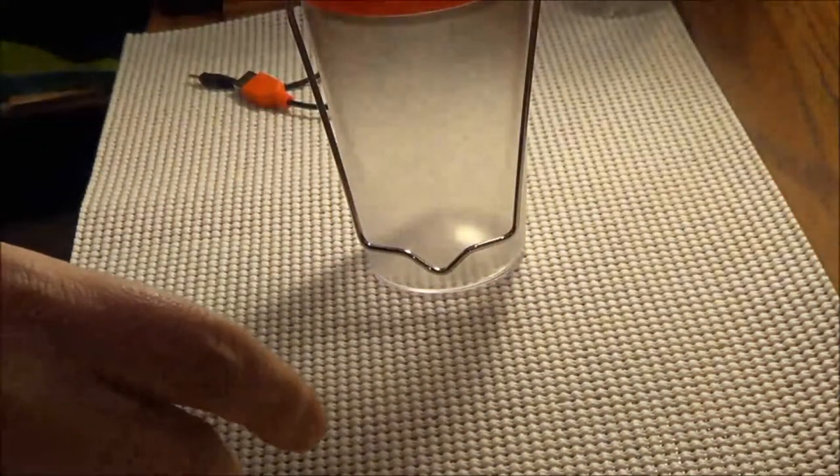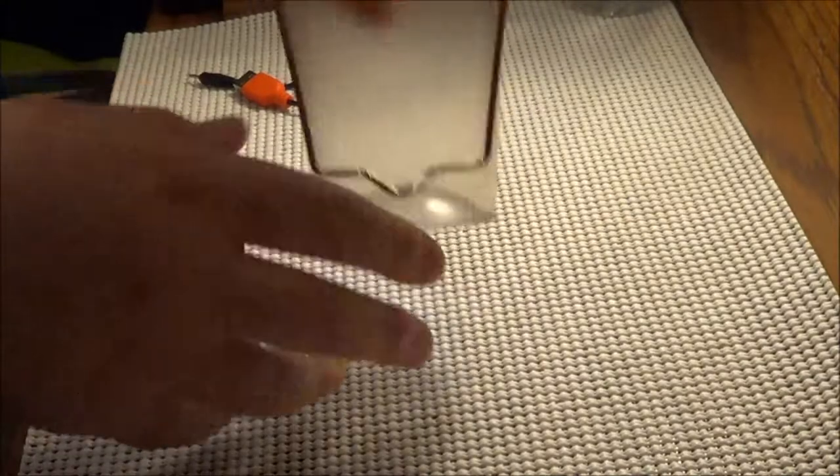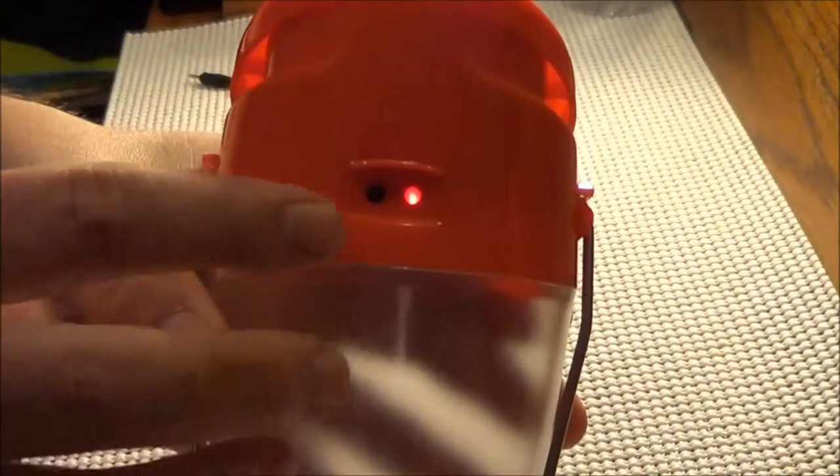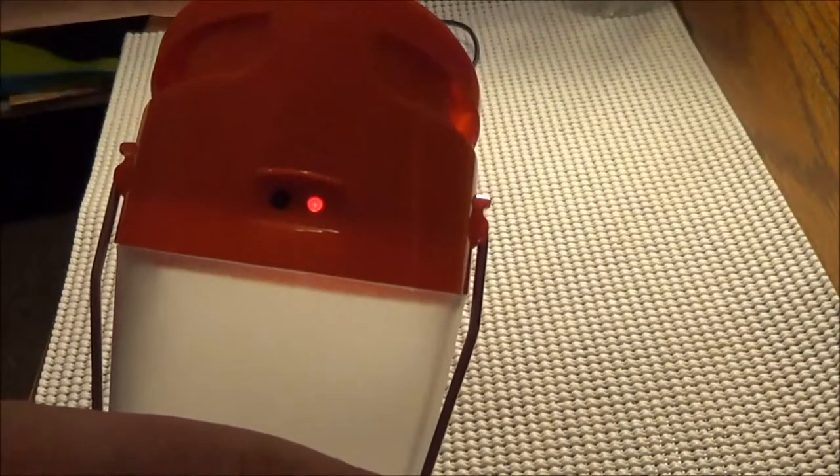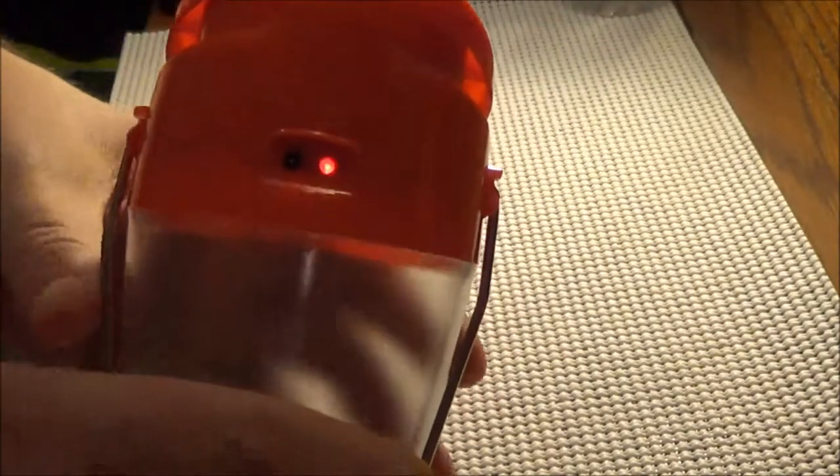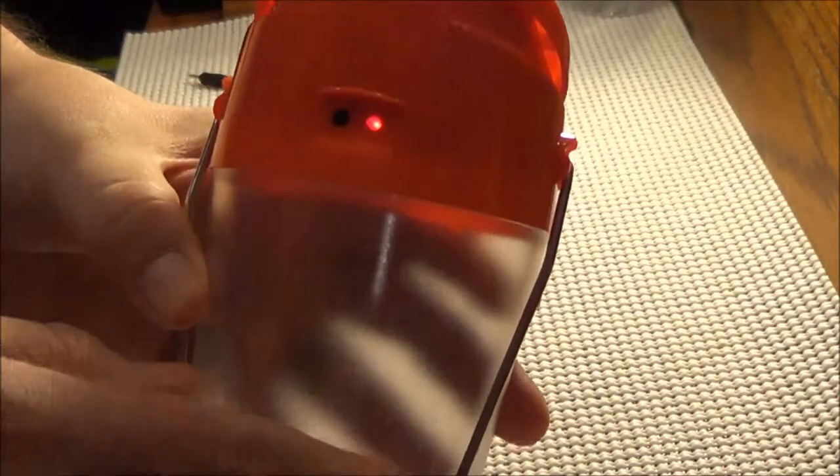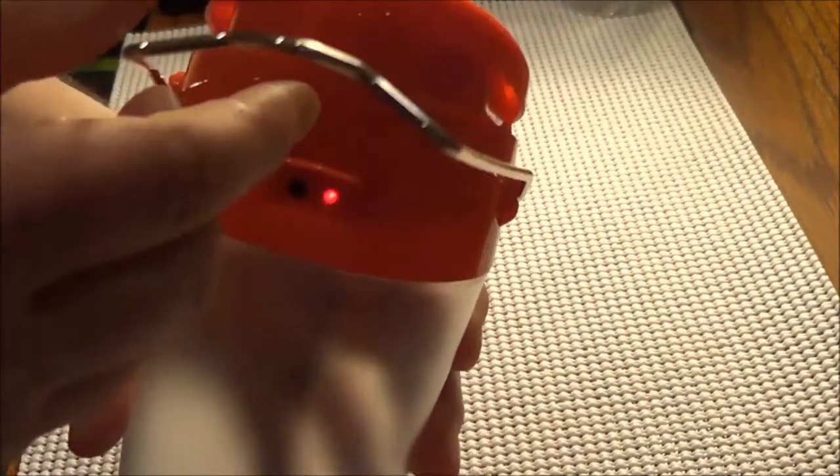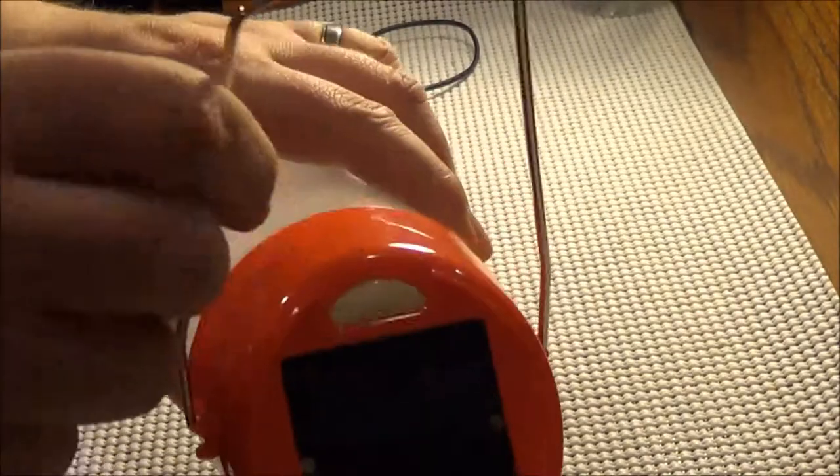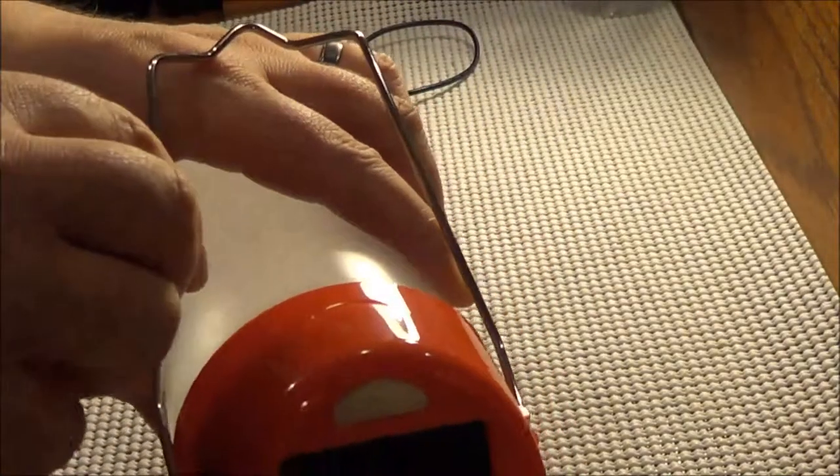This is the box that it comes in. On the light itself, in the front here you see this light that's lit. I believe that means it's getting a charge. And then the handle itself kind of has different locking areas where it locks, which is kind of cool.